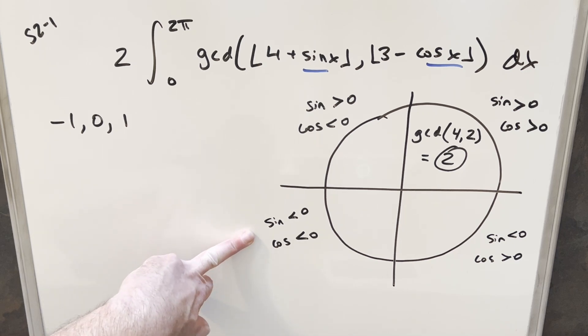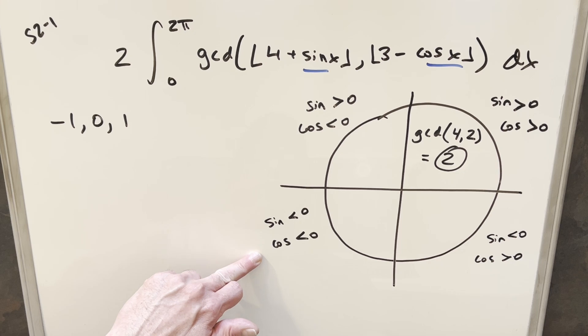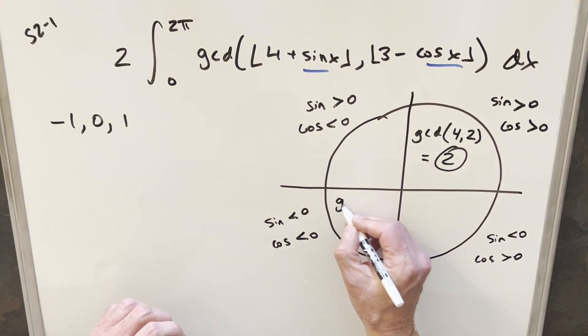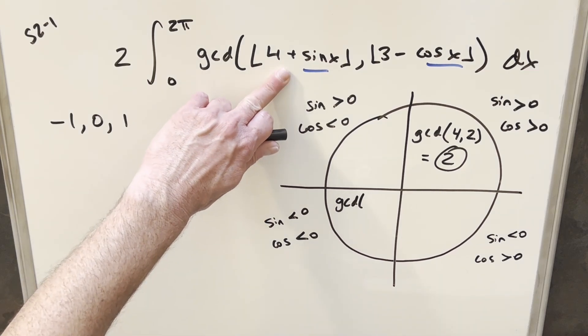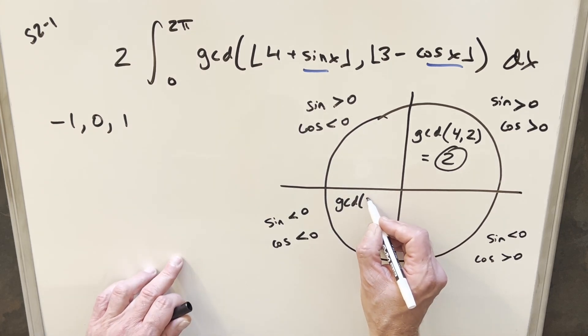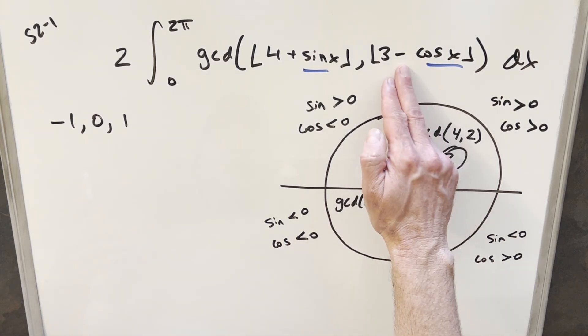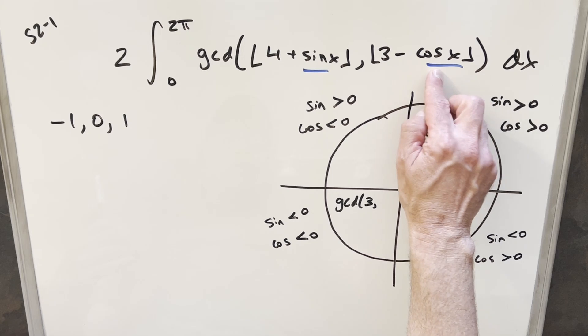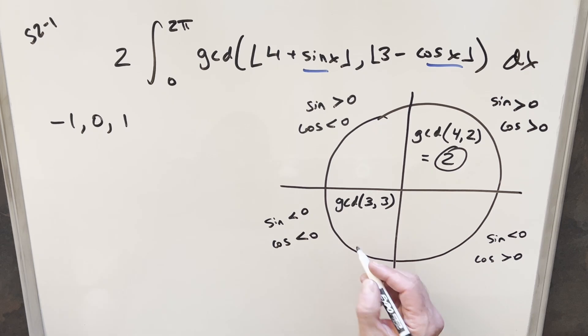Next, let's jump to quadrant three where both sine and cosine are negative. We want our GCD, this first value when sine is going between zero and minus one. For this first term, it's going to be between three and four, but the floor is going to round us down, so this number is going to be a three. Doing the same kind of thing with cosine, when cosine is between zero and minus one, so we have a negative cosine, but the minus is going to reverse that, so now this is going to be between three and four. The floor is going to round us down to three. Then taking the GCD of this, what divides three and three? Well, it has to be just three. So we've got our quadrant three value.